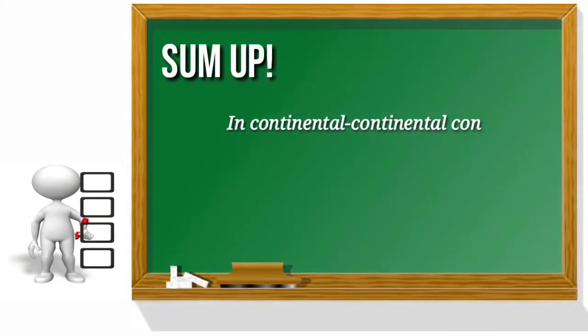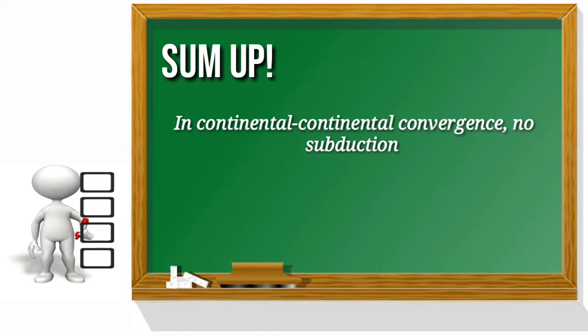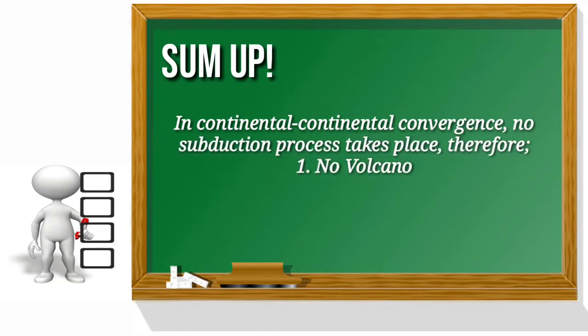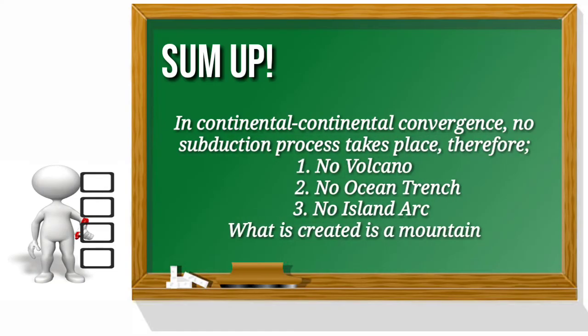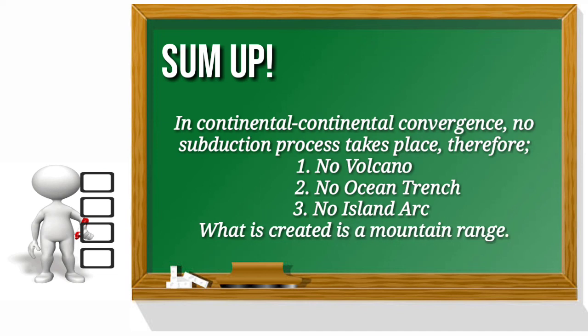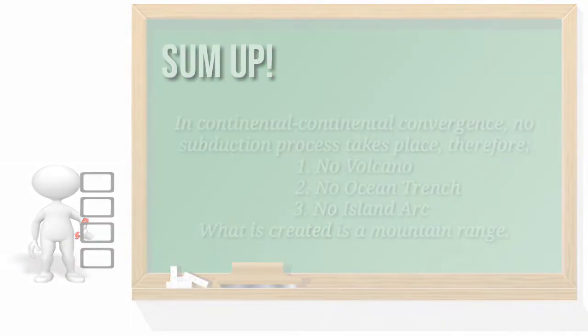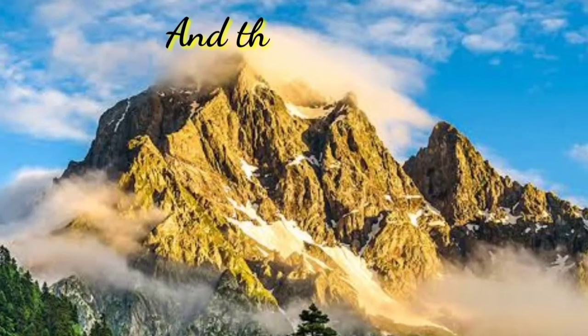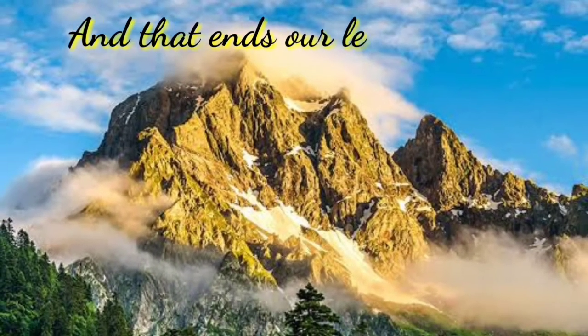In continental-continental convergence, no subduction process takes place. Therefore, no volcano, no ocean trench, and no island arcs are formed. What is created is a mountain range. And that ends our lesson. Congratulations! Thank you for watching.